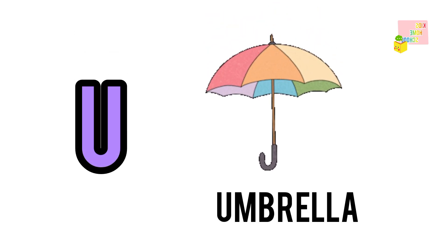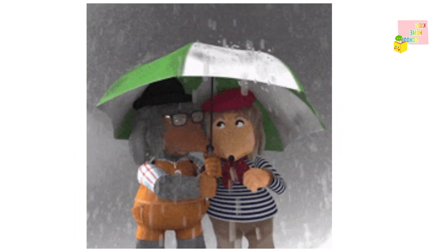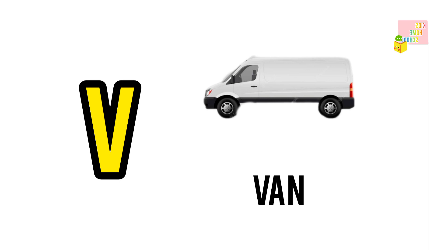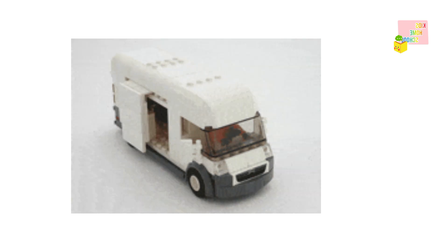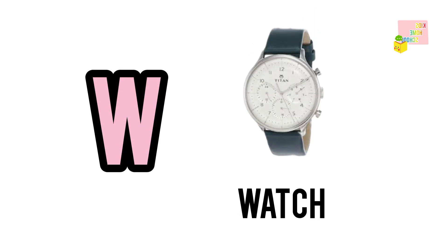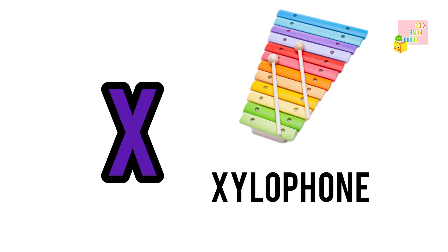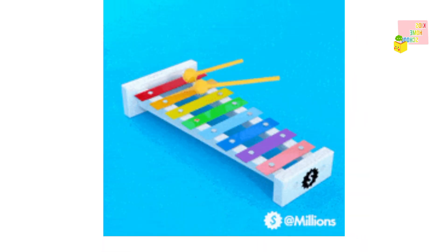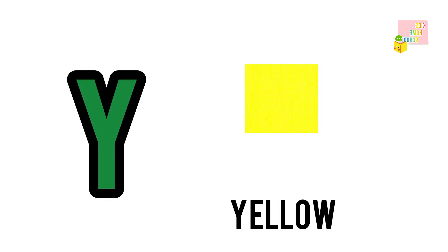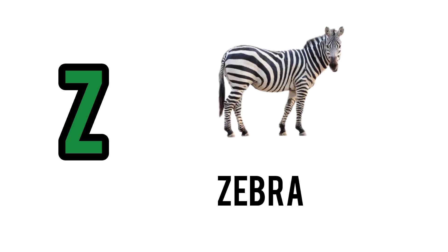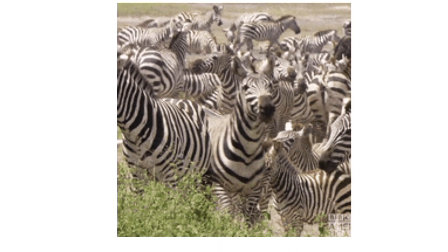U for Umbrella. Umbrella. V for Van. X for Xylophone. Y for Yellow. Z for Zebra.